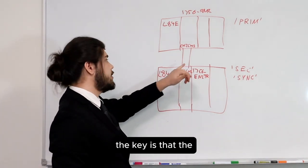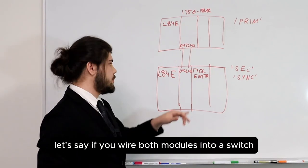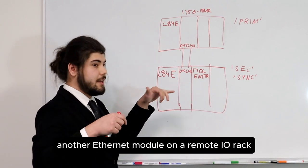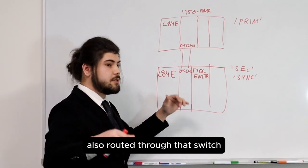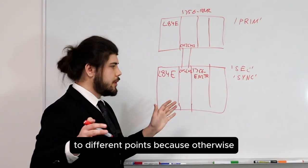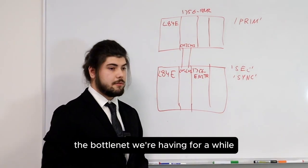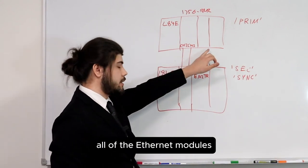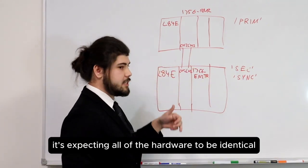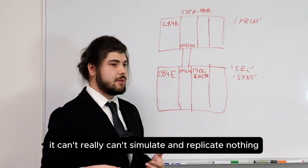The key is that communication modules in the same slot must be able to communicate over that network. If you wire both modules into a switch, then both modules can communicate through another Ethernet module on a remote IO rack, also routed through that switch, and maintain connection through switchover. You can't have the same-slot Ethernet modules communicating to different points, because otherwise they can't communicate with the same device — in our case our remote IO rack. This was actually the bottleneck we were having for a while, because we didn't realize that all of the Ethernet module ports had to be used.